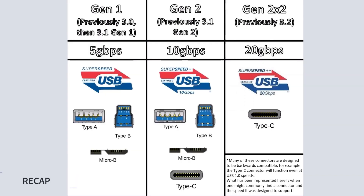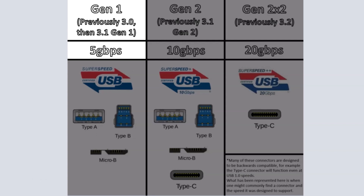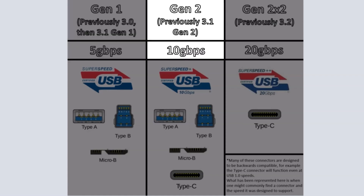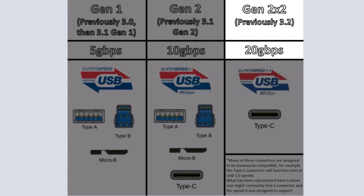Just a quick recap: the USB protocols have jumped leaps and bounds. USB 3.2 is the standard, trumping USB 3.1s and 3.0s. USB 3.2 is the new name. USB 3.2 Gen 2 is the new name for USB 3.1 Gen 1 — I know it can be a little confusing. And USB 3.2 Gen 2x2 is the former USB 3.2.